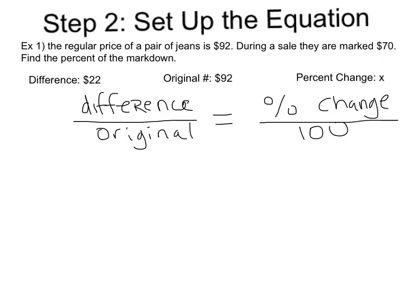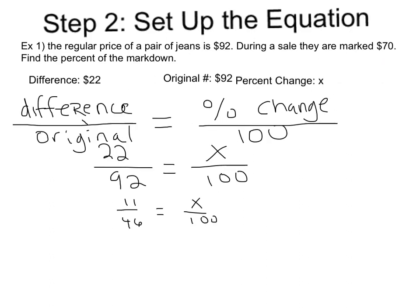Remember from the first slide that our percent change equation is the difference over the original equals the percent change over 100. So we're just going to substitute our values into those numbers. Again, if you can simplify your fractions, it's often easier to start there. So we're going to do that. Both 22 and 92 are divisible by 2.